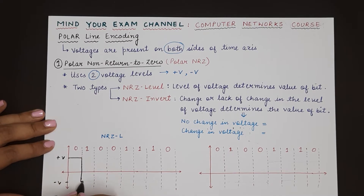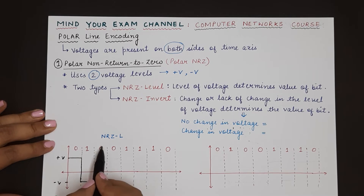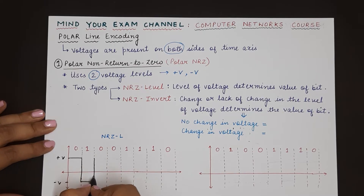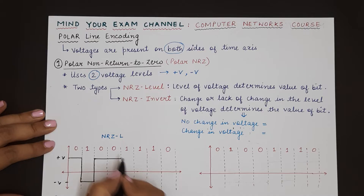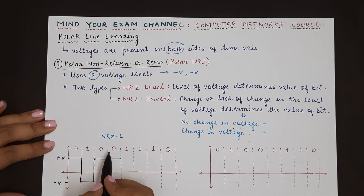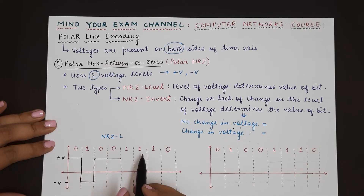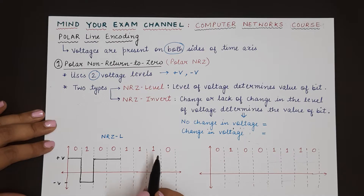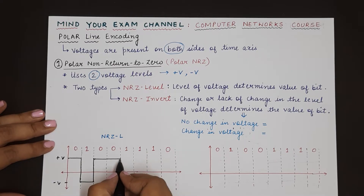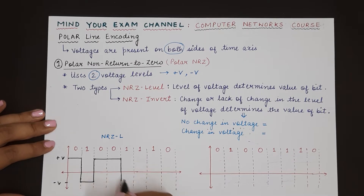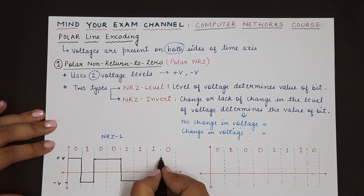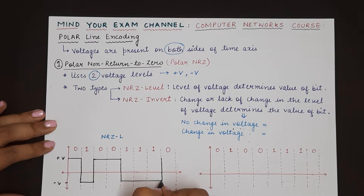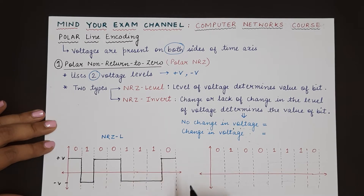Then he will go down to a negative voltage level because the next bit is 1. The next bit is 0, so the level will be high — positive voltage again. Then again a positive voltage because the bit is 0. Then the next three bits are 1, meaning minus V will represent those three bits. Then the next bit is 0, so we return to positive voltage.